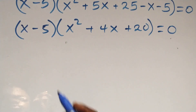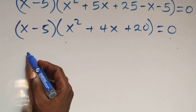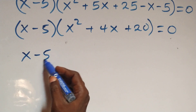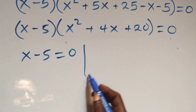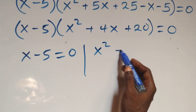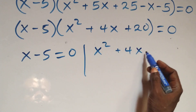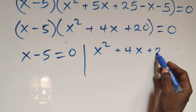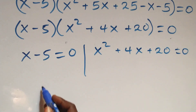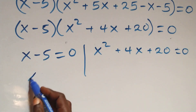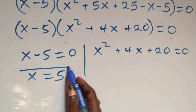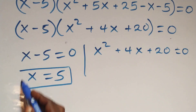We have two possible cases. The first one: x minus 5 equals 0, or x squared plus 4x plus 20 equals 0. Solving the first case, we have x equals 5, which is a real solution.